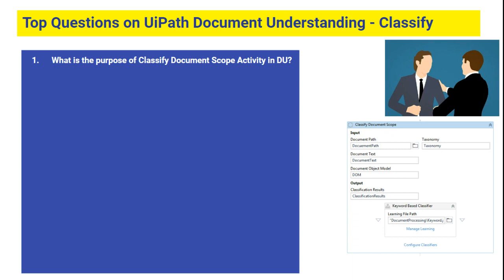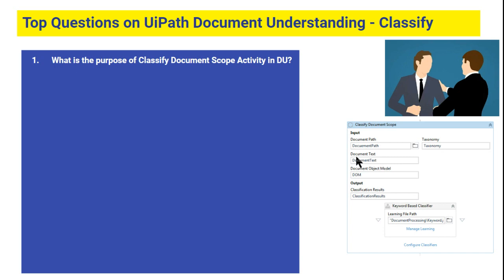After taxonomy and digitizing the document, this is the third step. In the first step — taxonomy — we are organizing how we want our documents. In the second step we are digitizing the document, and the output is stored in a text variable. In the Classify Document Scope step, we are trying to link the digitized document.